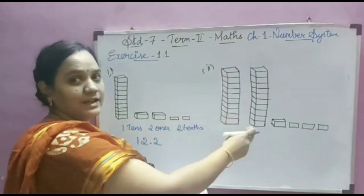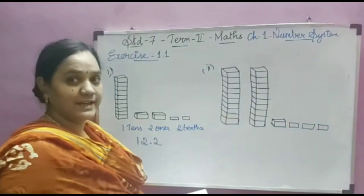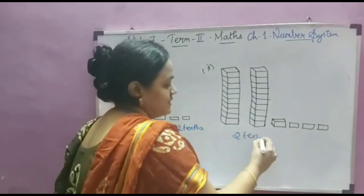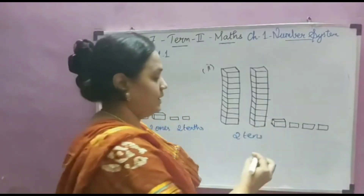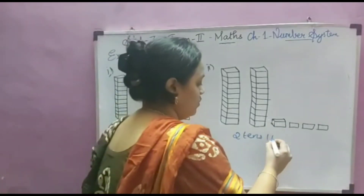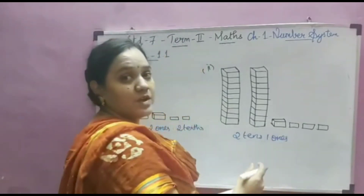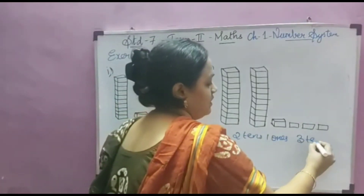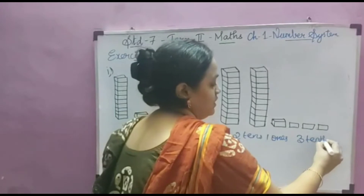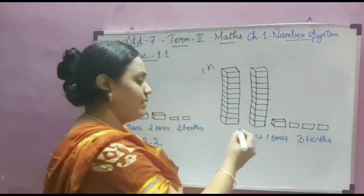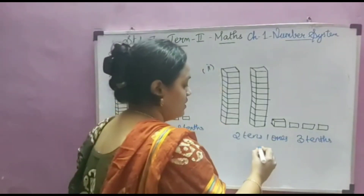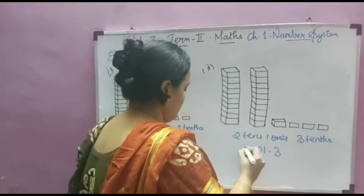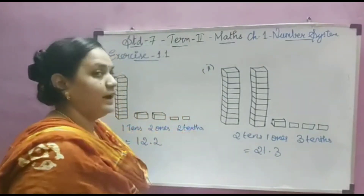This box mentions the tens place. So how many tens are there? 2 tens. How many ones boxes are there? 1 once. So how many decimal tenths place? 3 tenths. So we can mention this in decimal form: 21.3. That is your answer.